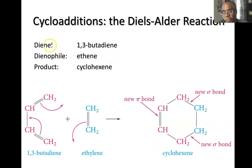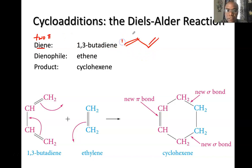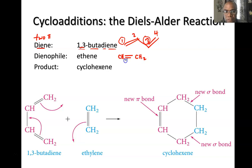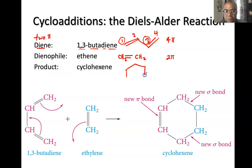A diene simply means two pi bonds. For example, 1,3-butadiene is drawn with four carbons and a pi bond on carbons one and three — 'buta' because there are four carbons, 'diene' because there are two double bonds. In the example of 1,3-butadiene reacting with ethene, the diene is the four pi system and ethene is the two pi system. The product will be cyclohexene.